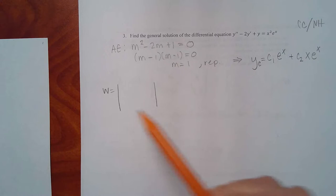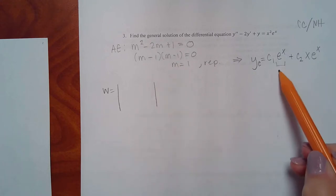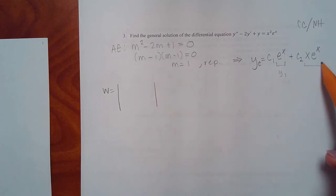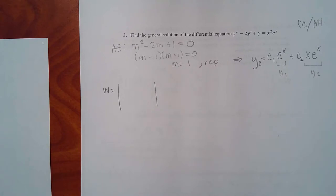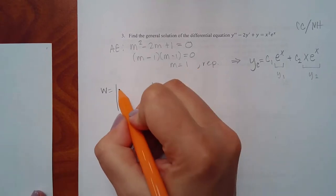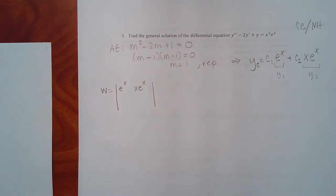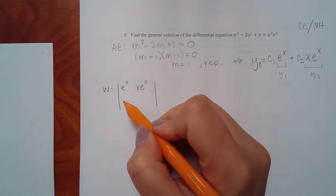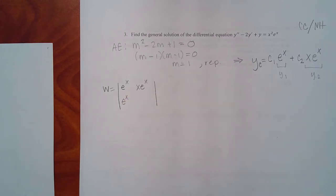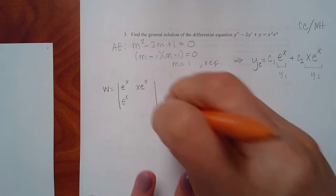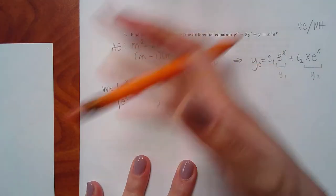For the Wronskian, y1 is e to the x and y2 is x·e to the x. The next row contains derivatives, so the derivative of e to the x is just e to the x. The second one requires the product rule — first times derivative of second plus second times derivative of first — giving x·e to the x plus e to the x.